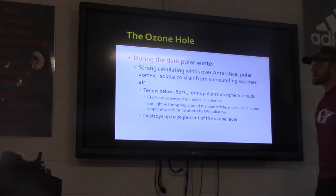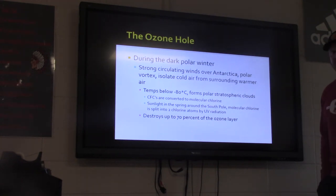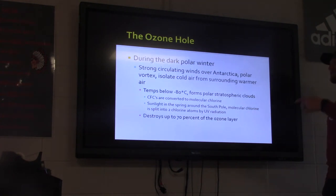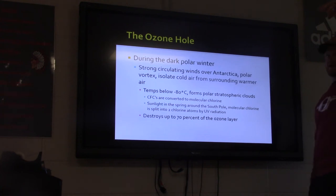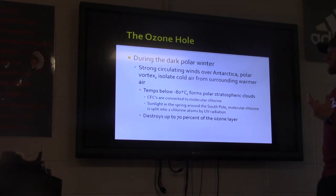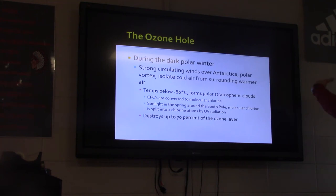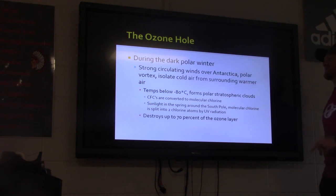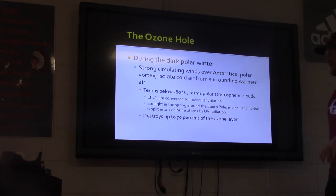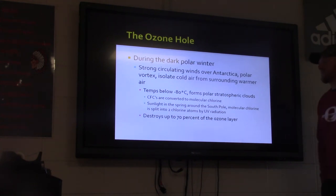During the polar vortex — strong circulating winds over Antarctica — cold air is isolated from surrounding warmer air. The temperatures were below negative 80 degrees, forming stratospheric clouds. The CFCs inside those clouds converted into molecular chlorine. Molecular chlorine is what breaks down the O3. This could destroy up to 70% of our ozone layer.